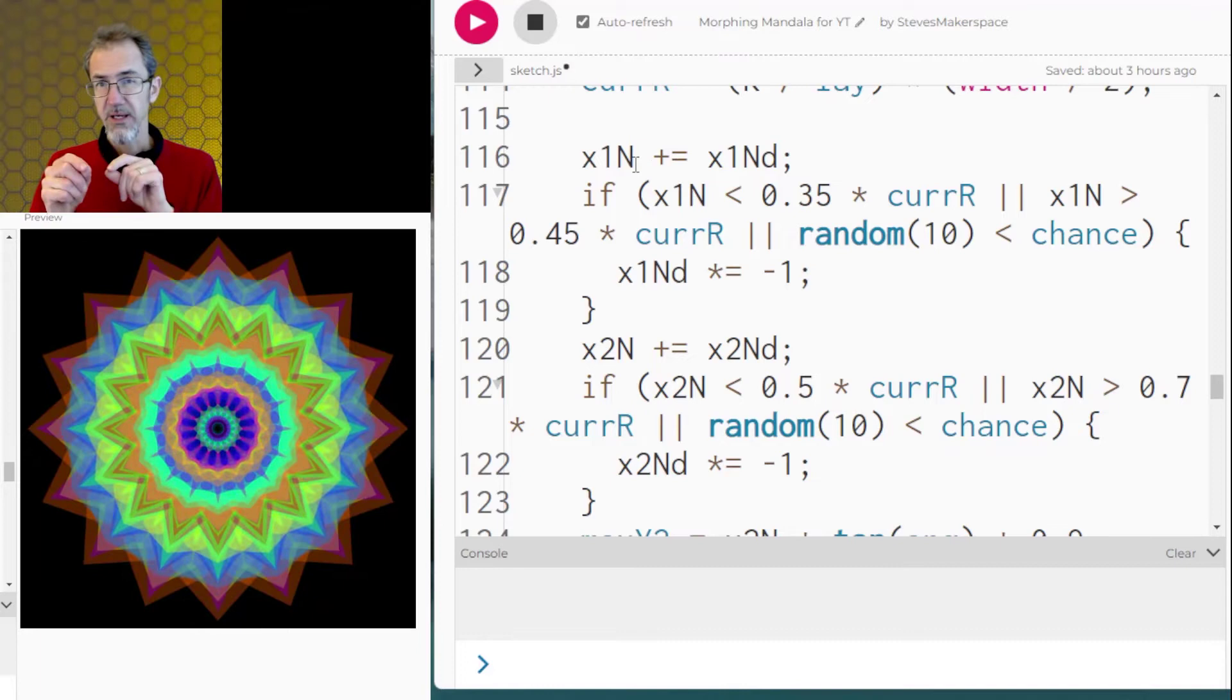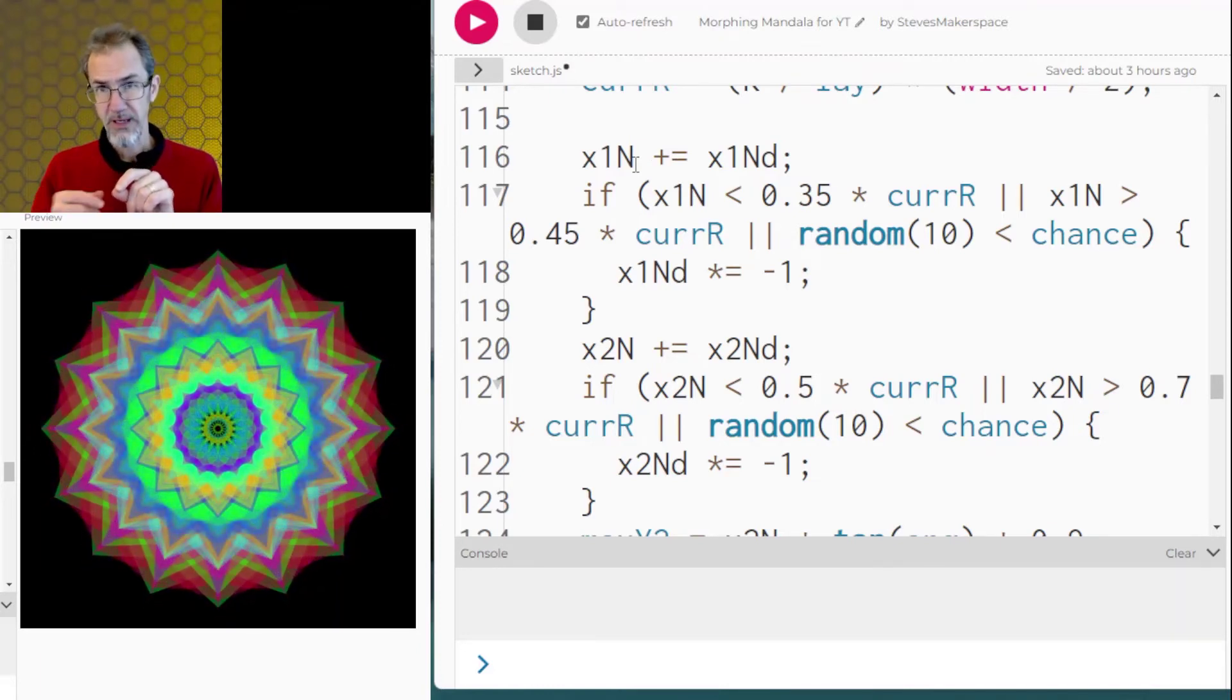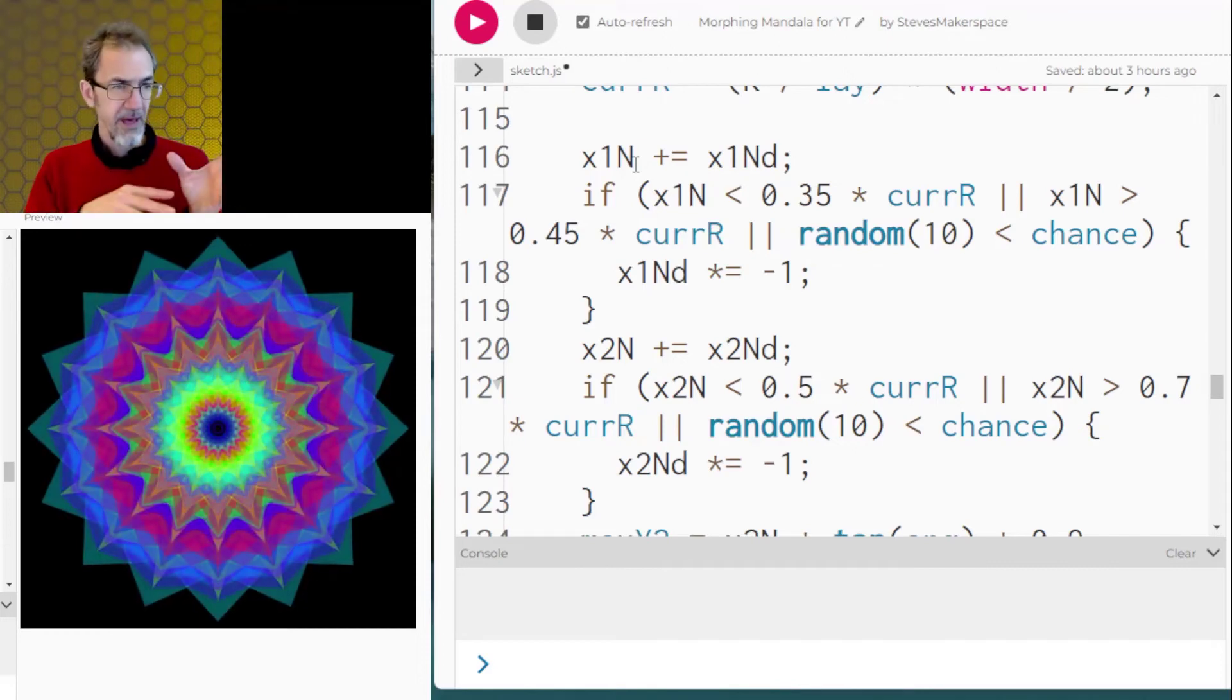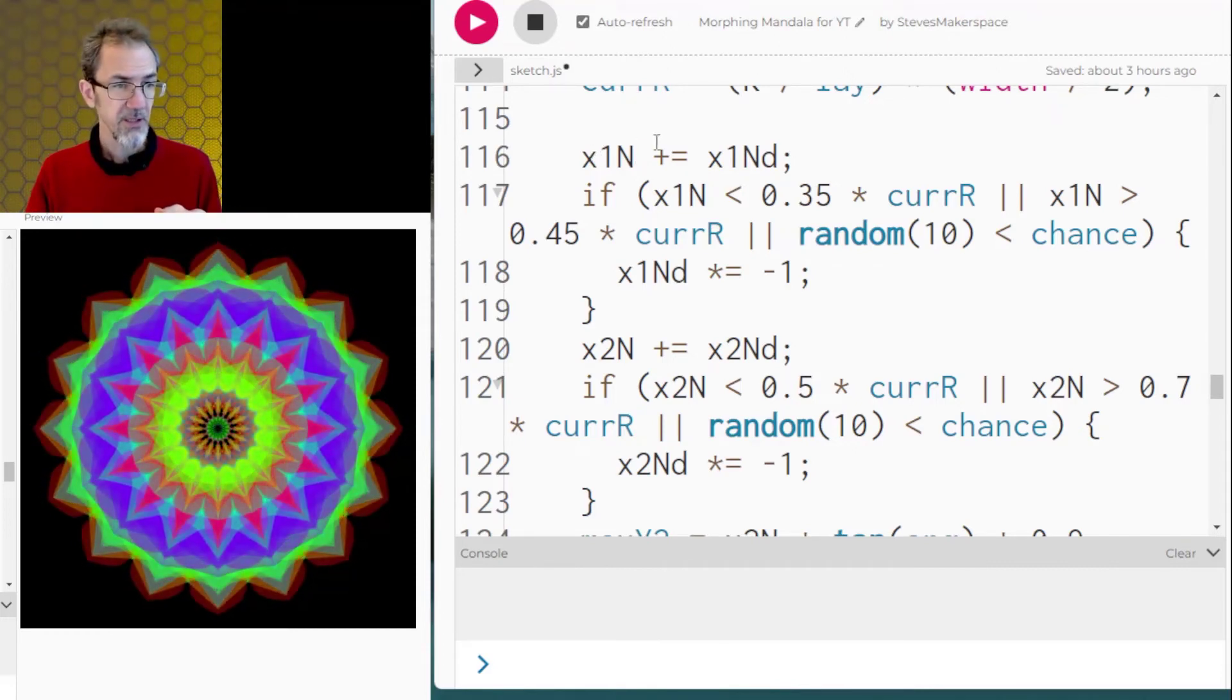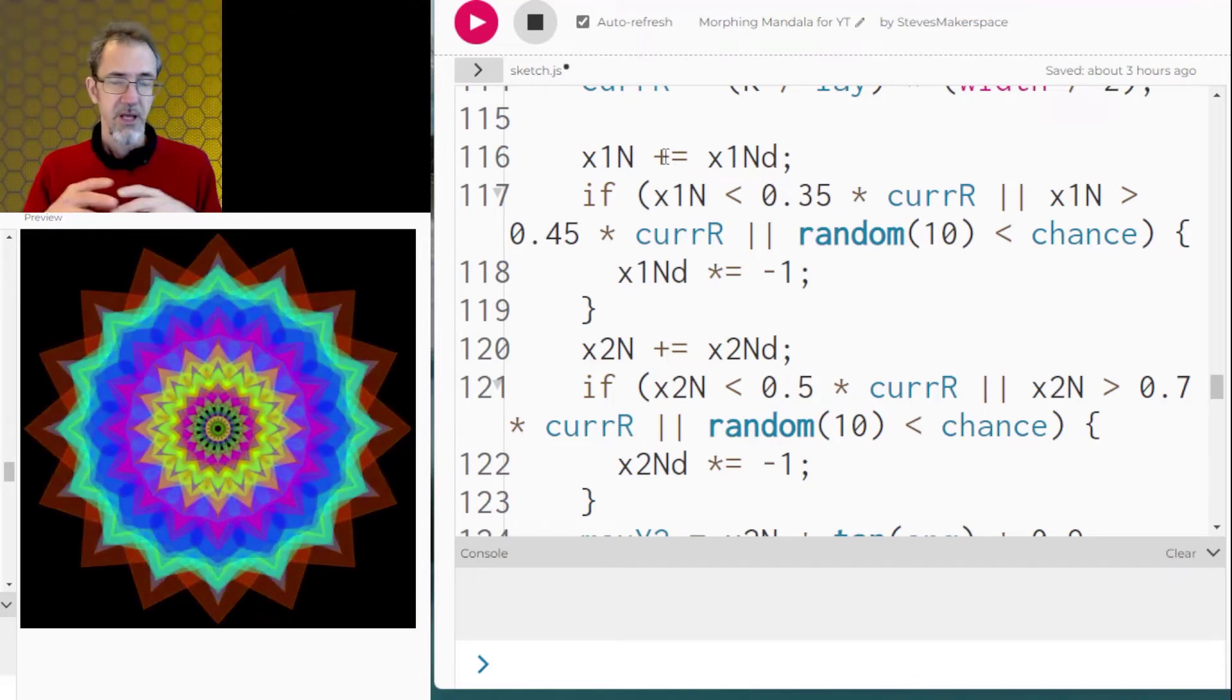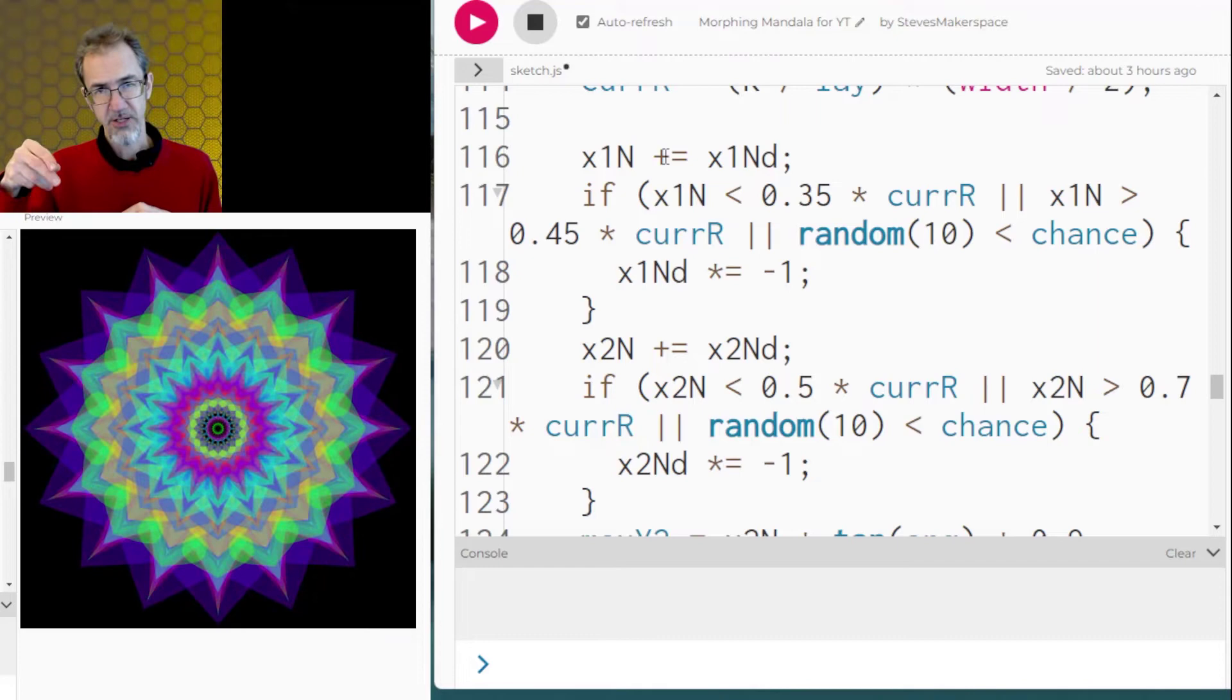And so we are adding the x position to an x direction to get a new x position. Now that particular x, this x1 that I'm looking at here, has a boundary. And so if it hits the edge of the boundary it's going to reverse direction.